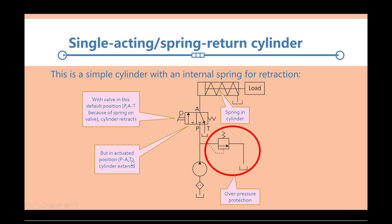In the actuated position, what you have is you have P to A comma T, so the T port then is not connected to anything, and P is connected to A, so the pressure source is connected to the actuation line going to the cylinder. And this valve is a three by two valve. We saw it before.